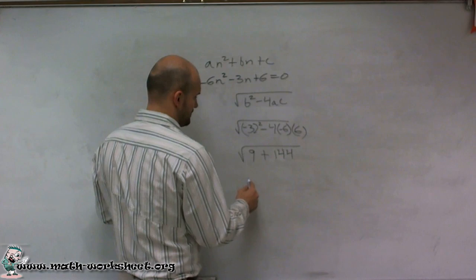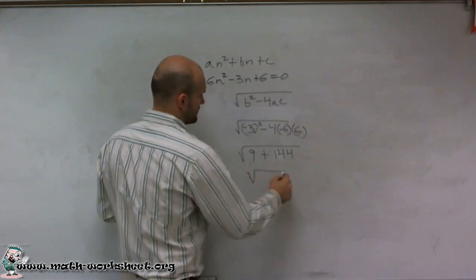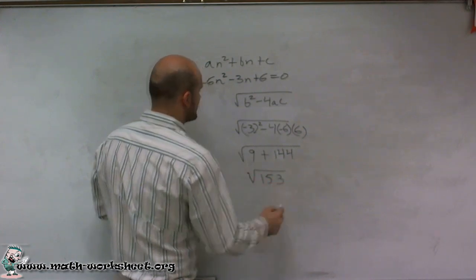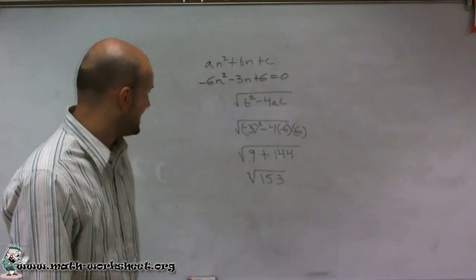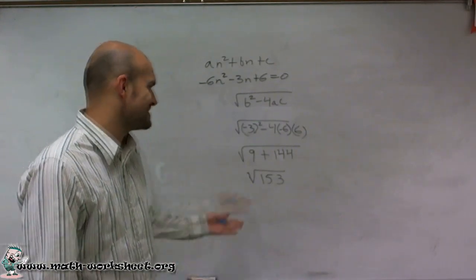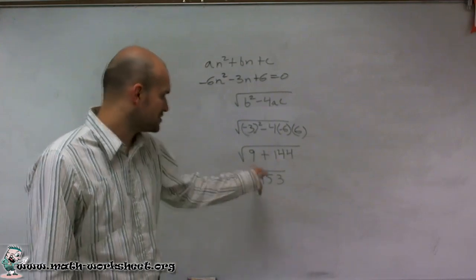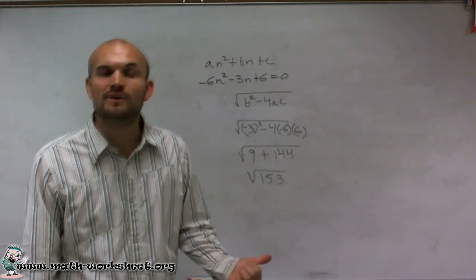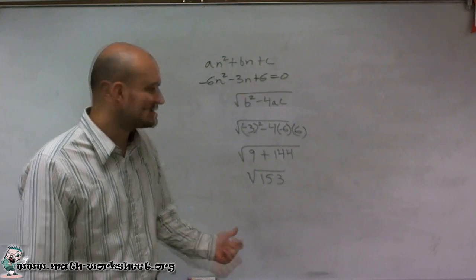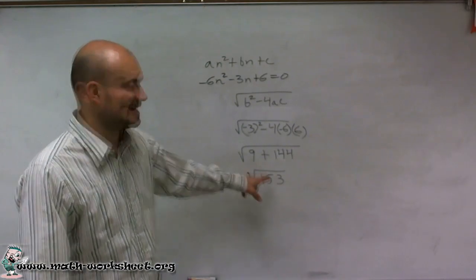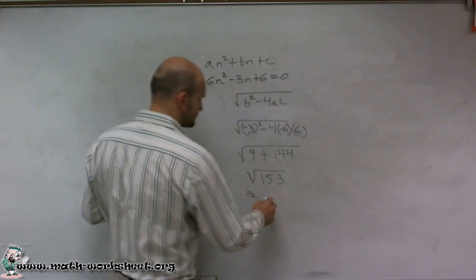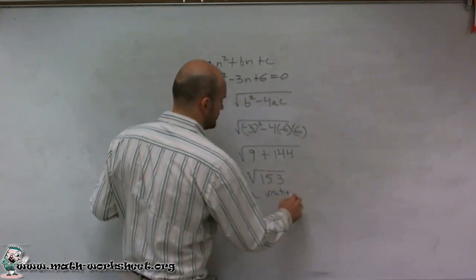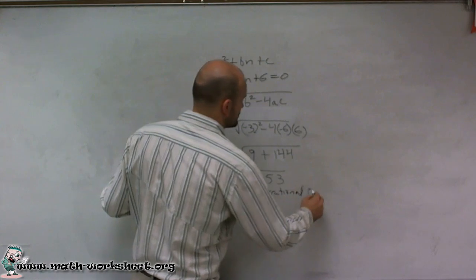So then I do the square root of 153, and I look at that and I say, is that a square number? And it's close to being a square number, but it's not actually a square number. The closest two square numbers between that are 144, 12 squared, and 169, 13 squared. So this is not a square number, so therefore, what I'm going to have is two irrational solutions.